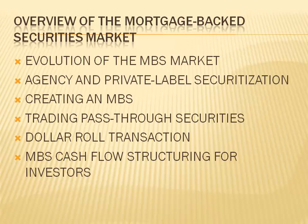Agency mortgage strips: Principal-only (PO) and interest-only (IO) securities are created by placing agency pools into a trust and splitting the cash flows into two components. PIO strips receive principal payments including regular and prepaid principal. IO strips receive only the interest earned. PO strips perform well when interest rates fall because there will be more cash flows as a result of mortgage prepayment. IO strips perform well when interest rates rise because prepayments slow, resulting in continued generation of interest due to the lack of prepayment.